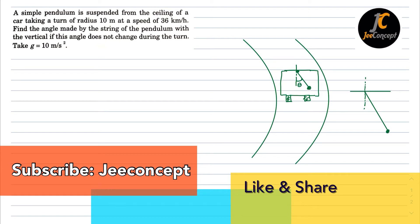Hello friends, in this video we will find the solution of a problem which says a simple pendulum is suspended from the ceiling of a car taking a turn of radius 10 meter at a speed of 36 km per hour. Find the angle made by the string of the pendulum with the vertical if this angle does not change during the turn.